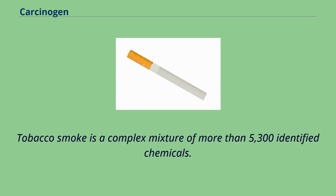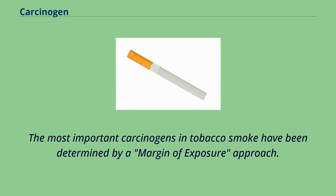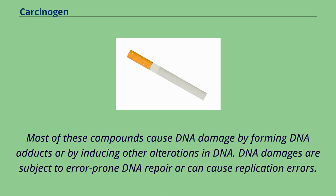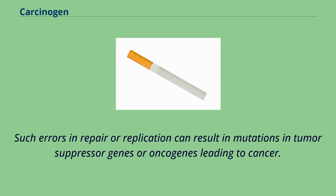Tobacco smoke is a complex mixture of more than 5,300 identified chemicals. Using a margin-of-exposure approach, the most important tumorigenic compounds in tobacco smoke were, in order of importance: acrolein, formaldehyde, acrylonitrile, 1,3-butadiene, cadmium, acetaldehyde, ethylene oxide, and isoprene. Most of these compounds cause DNA damage by forming DNA adducts or by inducing other alterations in DNA. DNA damages are subject to error-prone DNA repair or can cause replication errors, resulting in mutations in tumor suppressor genes or oncogenes leading to cancer.